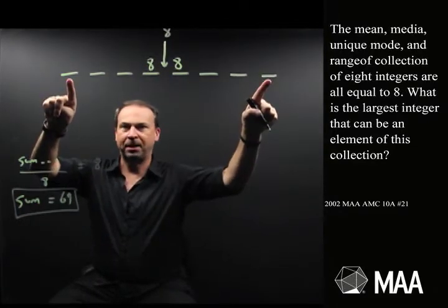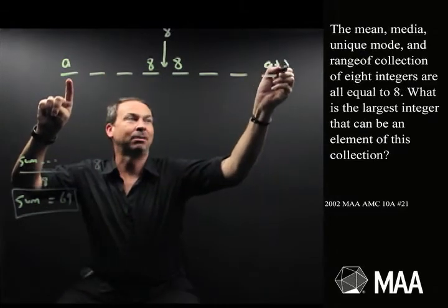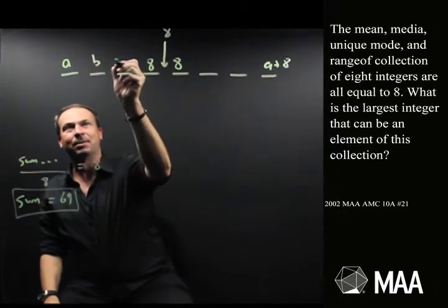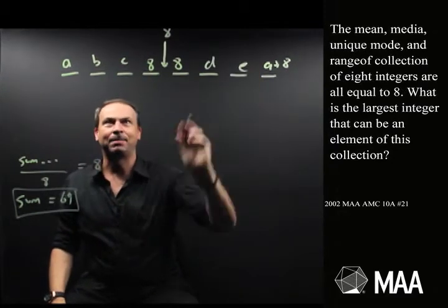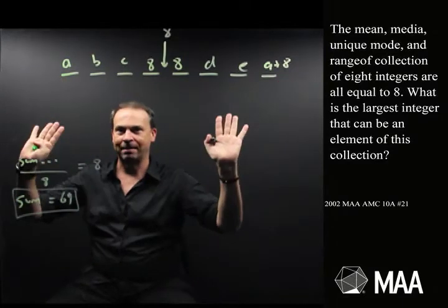Range means the difference between the biggest and the smallest. So whatever this number is, I'll call it A. This must be A plus 8. Range of 8. Which means the rest of the numbers I don't know at the moment, I'll just call them A, B, C, D, and E, the last one being A plus 8. That's the situation I've got.